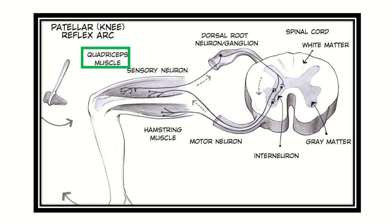Here we can see the quadriceps reflex, or patellar knee reflex. This is the patellar tendon. When tapped by the hammer, the sensory neuron carries the sensation through the sensory neuron, goes through the dorsal root ganglia, and finally reaches the spinal cord. From the spinal cord, the efferent or motor fiber originates and conveys a signal to the anterior thigh muscles — the quadriceps group — causing contraction of the quadriceps muscle. That means the four muscles — rectus femoris, vastus medialis, vastus lateralis, and vastus intermedius — contract and the patellar tendon reflex or quadriceps reflex develops.